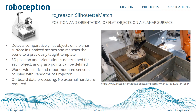Another module is RC Reason Silhouette Match. This module runs onboard the RC Wizard and is made for detecting comparatively flat objects on planar surfaces and placing them accurately in a machine or at a target position. Unlike the previous modules, this requires a CAD model of the object to generate a template, which is then recognized by the module. Optimally, you would also use the random dot projector with this particular software.